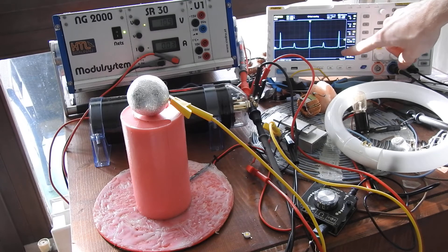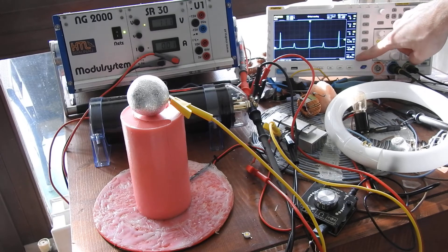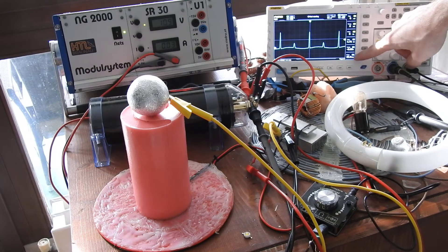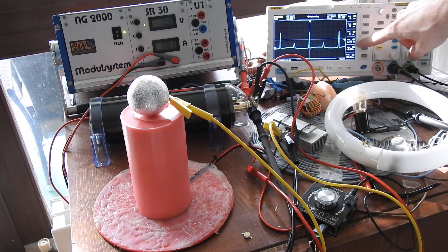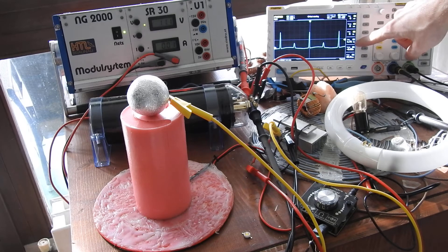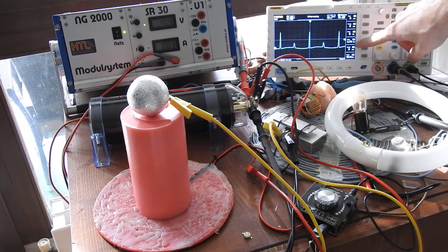As you can already see on the oscilloscope itself, we have here at the frequency of 35 kilohertz large voltage spikes of currently around 1.7 kilovolts peak to peak.